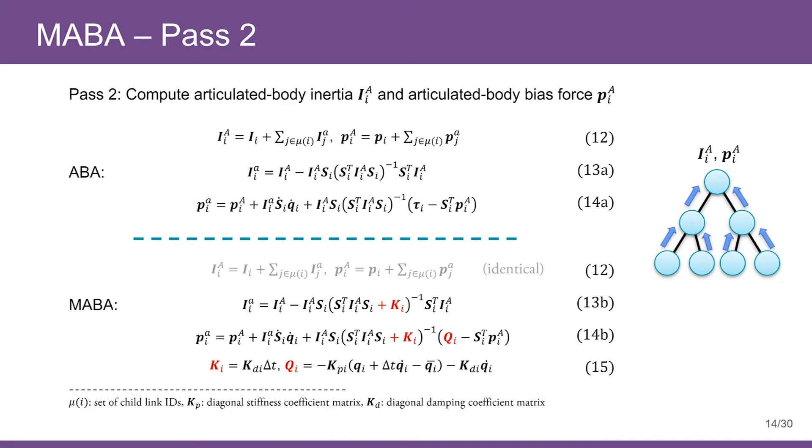In the second pass, we compute articulated body inertia and bias force from leaves to root. As a result of integrating SPD constraints inside ABA, some minor changes are required for computing articulated body inertia and bias forces. More specifically, extra quantities Ki and Qi are involved in the calculation. These quantities are SPD-related where Ki is damping coefficient matrix times the time step, and Qi contains the known parts of the SPD control forces.